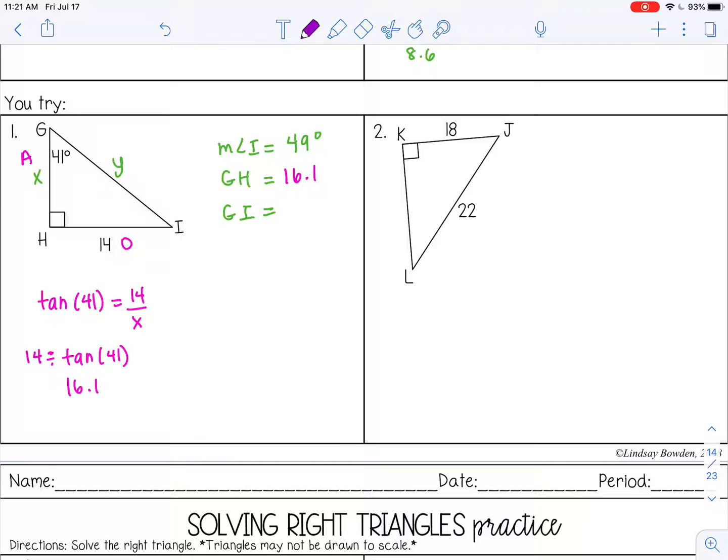And then I'm going to solve for y next. So this is still opposite. This is my hypotenuse. So that would be sine of 41. So again I'm going to divide. And I get 21.3.